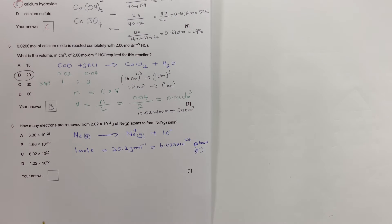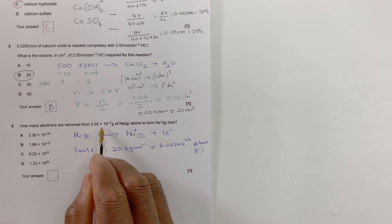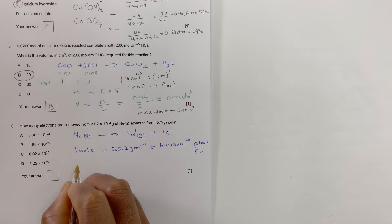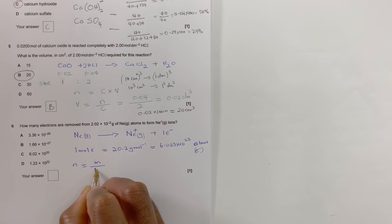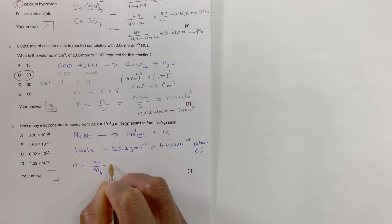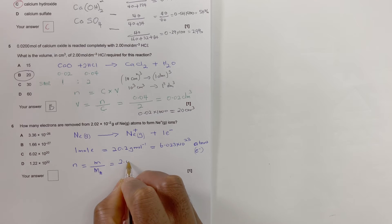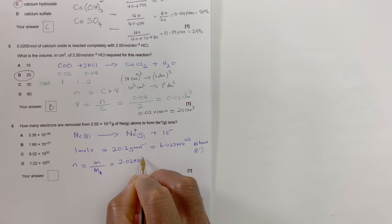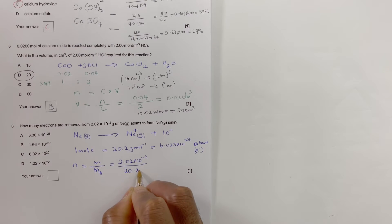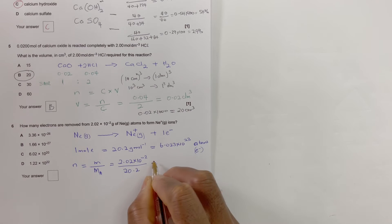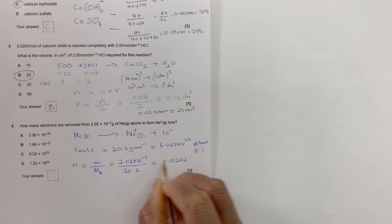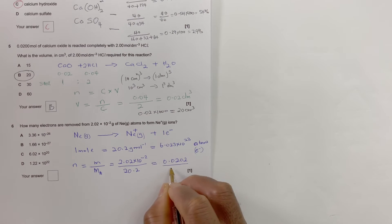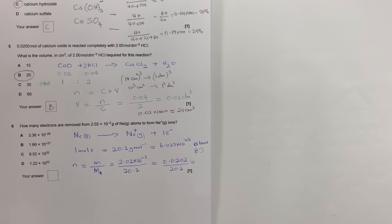In 20.2 grams of neon you can remove that many electrons, but we don't have one mole here. To find the moles, moles equals mass over relative atomic mass, which is 2.02 times 10 to the minus 2 over 20.2 — that's 0.020 over 20.2.